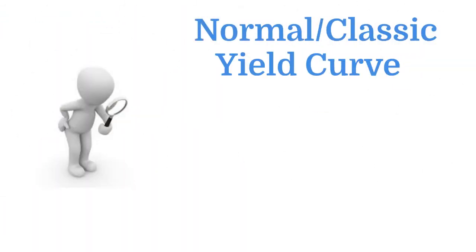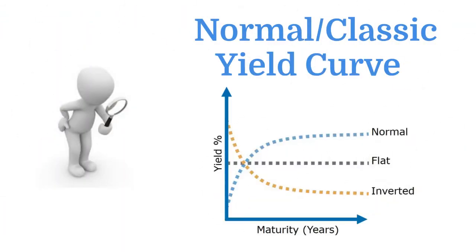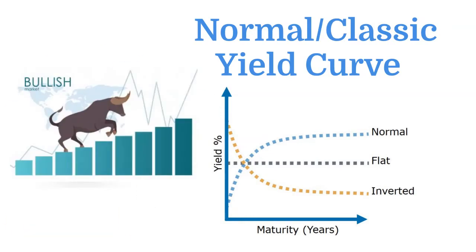A normal, classic yield curve has low short-term rates and high long-term rates. The reason why the short-term rates are low is it makes money cheap for corporate America. And the reason why the long-term rates are high is because the long-term investors in treasuries are worried about inflation. A classic normal yield curve is bullish for the U.S. economy.